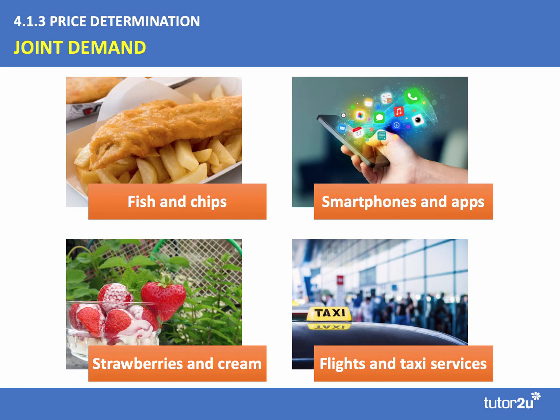Now related to that is joint demand. Joint demand is when demand for one product is positively related to the market demand for a related good or service that is complementary. So fish and chips, smartphones and apps, strawberries and cream, and in the transport sector, flights and taxi services — these are good examples of complements, and they're said to be in joint demand.